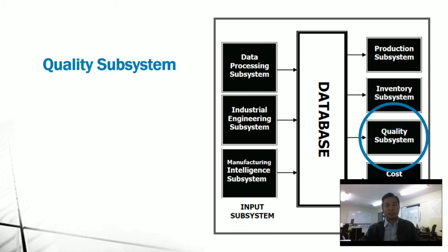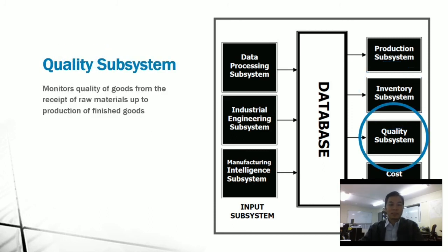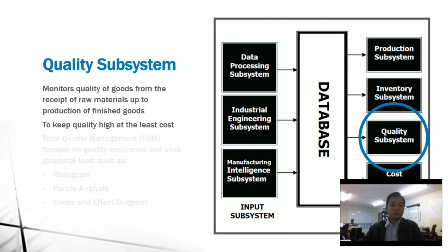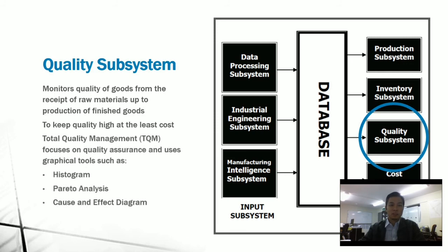Next would be the quality subsystem, which monitors the quality of goods from the receipt of raw materials up to the production of finished goods. It is a challenge for every organization to keep high quality at the least cost. The quality subsystem also uses total quality management, or TQM, which focuses on quality assurance and uses graphical tools such as histograms, Pareto analysis, and cause-and-effect diagrams.